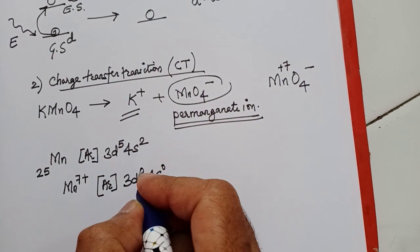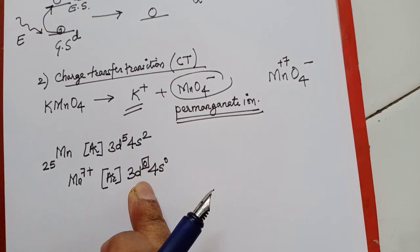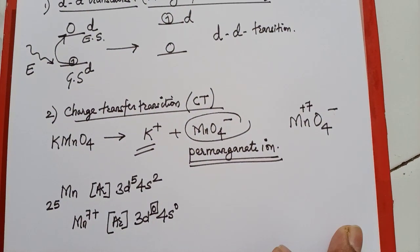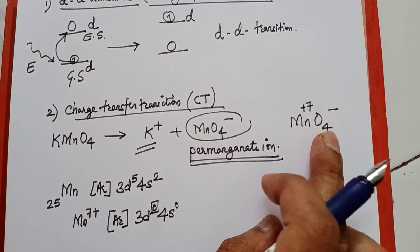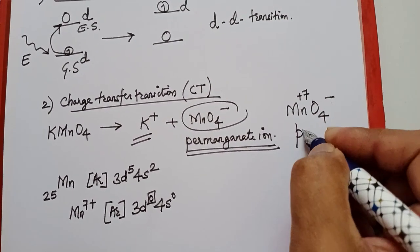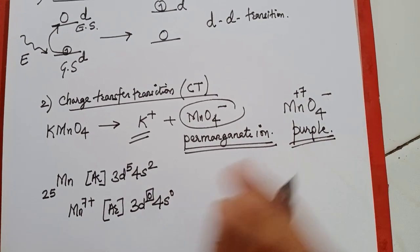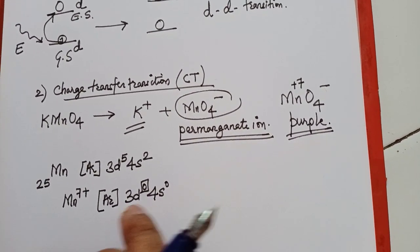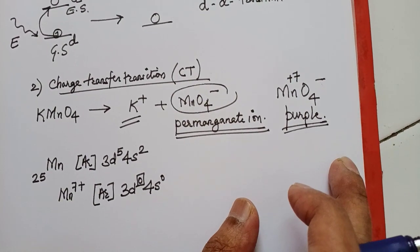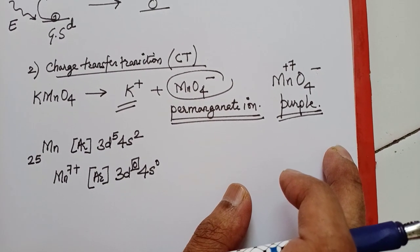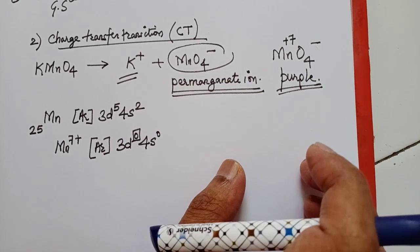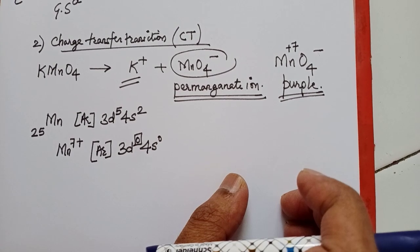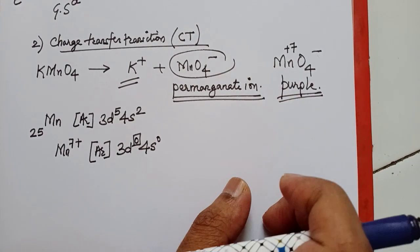Since there are no electrons in the d orbitals of Mn⁷⁺, a d-d transition is not possible. Yet we know this compound is intensely colored — permanganate ion is intense purple in color. This purple color cannot be attributed to d-d transitions since there are no d electrons. So there must be another reason for this compound to be so intensely colored, and it is important to understand what transition is responsible for imparting this color.